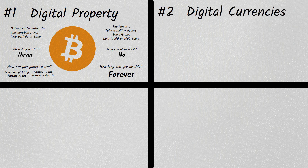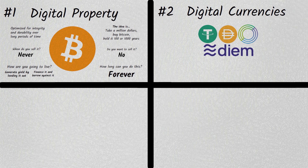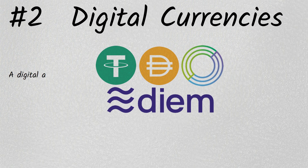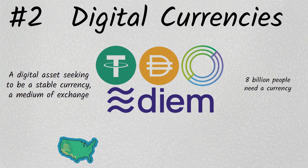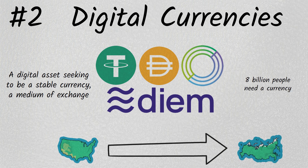Digital currencies are Tether, DAI, Circle — DM will be a digital currency, a CBDC. That's a digital asset seeking to be a stable currency; it's a medium of exchange. Eight billion people need a currency. The currency is the medium of exchange; the property is the store of value.